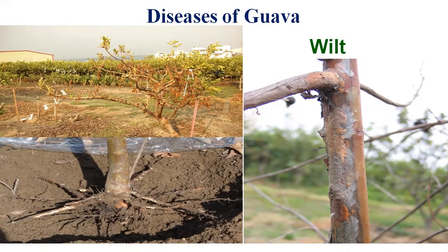The primary source of infection occurs by dormant mycelium from the soil, and the secondary source of infection is by conidia — in the form of macroconidia and microconidia — by irrigation water. These are the symptoms and the primary and secondary sources of the wilt disease of Guava.